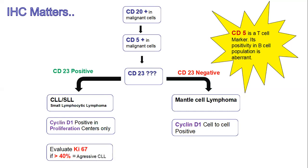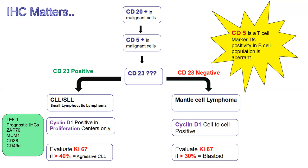Next we evaluate Ki-67. Some use Ki-67 early in the flowchart to differentiate high-grade from low-grade lymphoma. If Ki-67 is more than 40% in CLL/SLL, it is considered aggressive CLL/SLL. If Ki-67 is more than 30%, it is considered the blastoid variant of mantle cell lymphoma. Additional IHC markers for CLL/SLL include LEF1, which is positive in CLL/SLL, and prognostic markers ZAP-70, MUM1, CD38, and CD49D. For mantle cell lymphoma, cells are positive not only for cyclin D1 but also SOX11 and CD43. Note that a few cases are cyclin D1-negative but SOX11 is still positive.